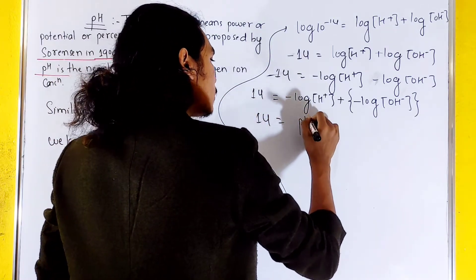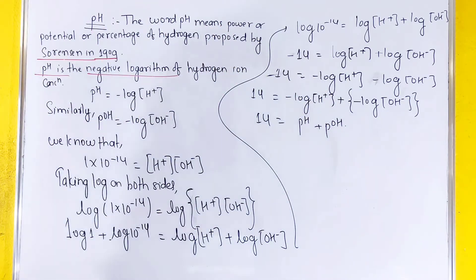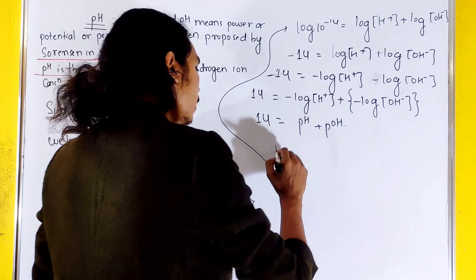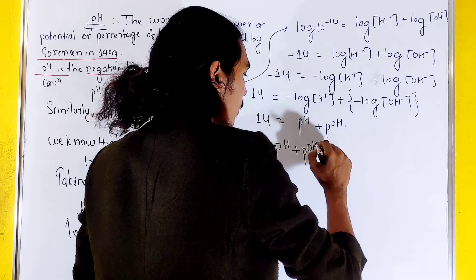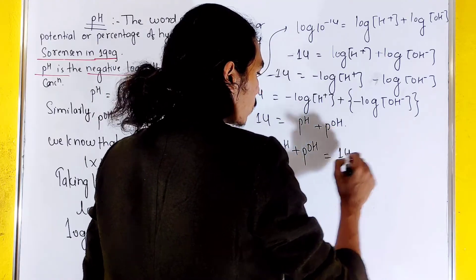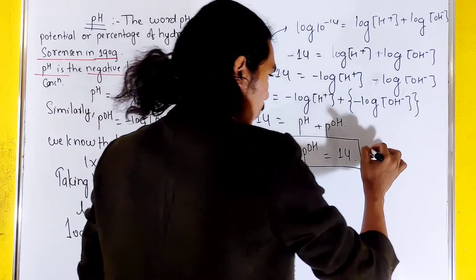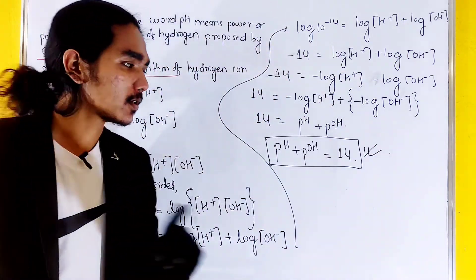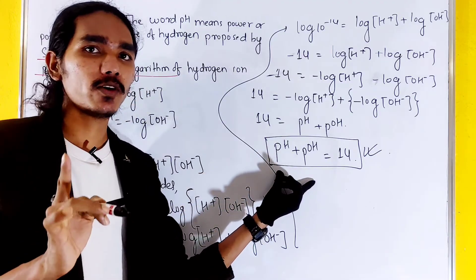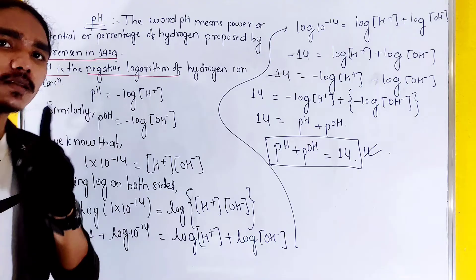Now we can state that pH plus pOH equals 14. This is what we can prove. Hence, from both the examination point of view and the numerical point of view, this formula is very important.